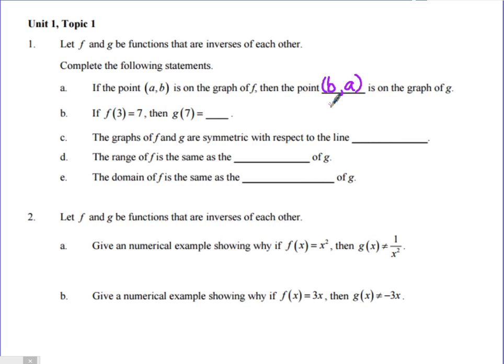If f(3) = 7, then g(7) = 3. So they stated before that f and g are inverses, so we know the point (x,y), we're plugging that in. This point (x,y) should be on its inverse.